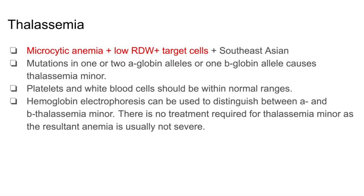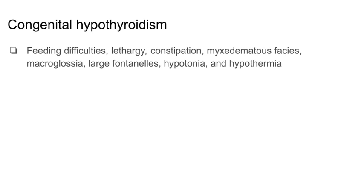Hemoglobin electrophoresis can be used to distinguish between alpha and beta-thalassemia minor. If you have a newborn with feeding difficulties, lethargy, constipation, large fontanelles, hypotonia, hypothermia, and macroglossia, you want to think about congenital hypothyroidism.